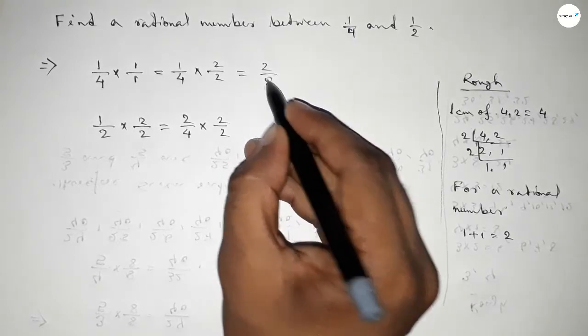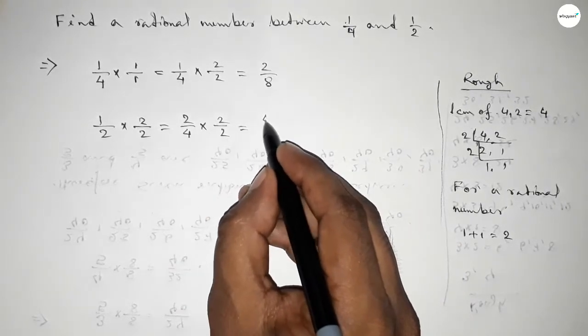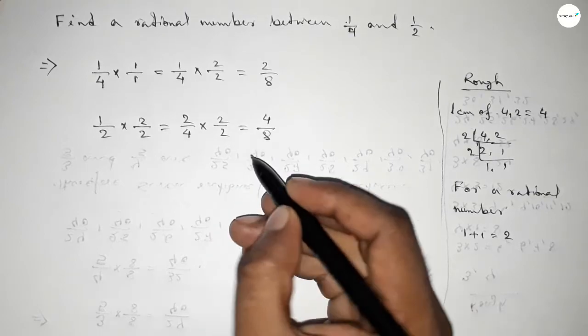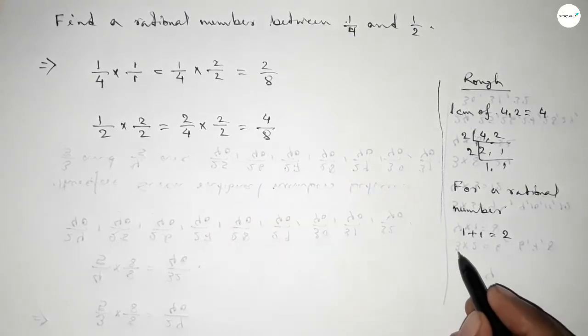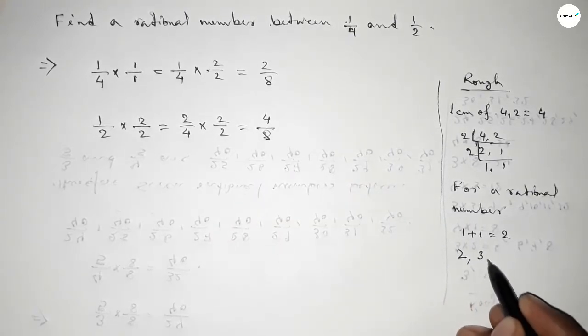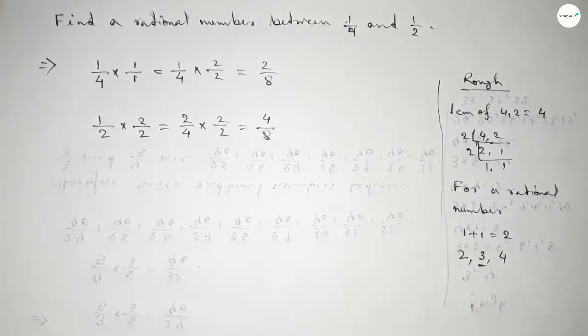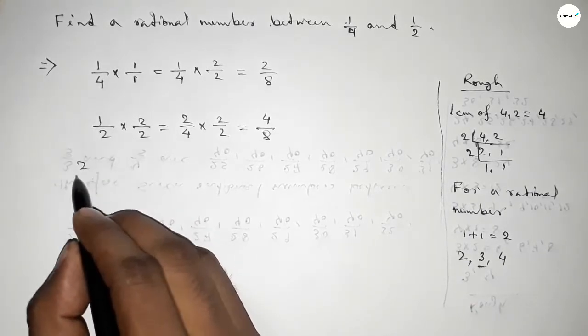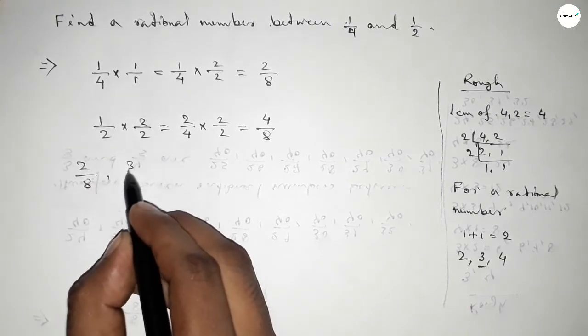Now between 2 to 4 we can get one natural number 3, and by this natural number we can form a rational number. So here all the rational numbers are 2 over 8 and 3 over 8 and last one 4 over 8.